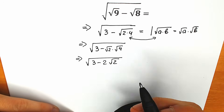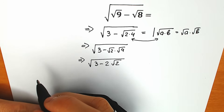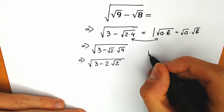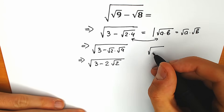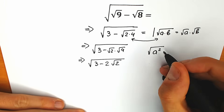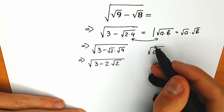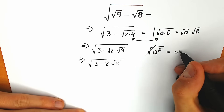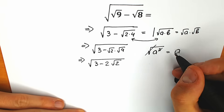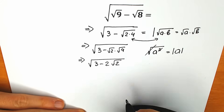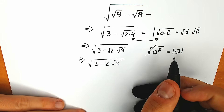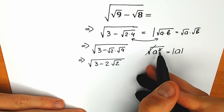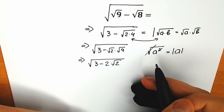What do I mean? For example, if we have square root of a squared, everyone knows we can cancel the square root sign and the power of 2. As a result, we have the absolute value of a — that is the correct way to express it. So we cancel the square root sign and the square, which simplifies things a lot.